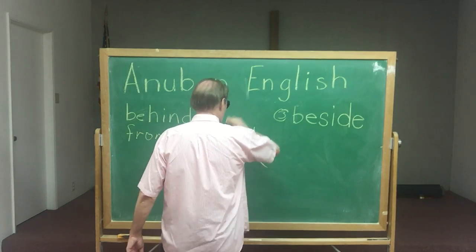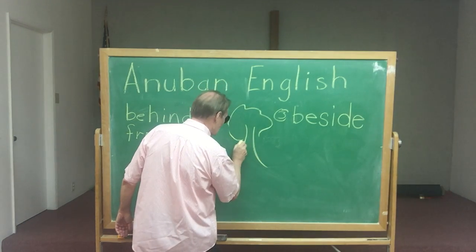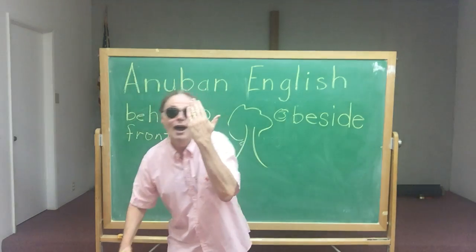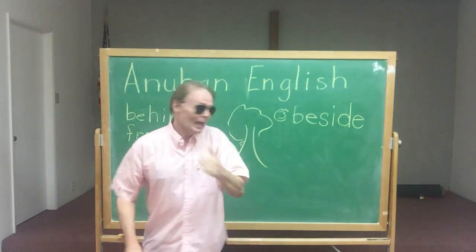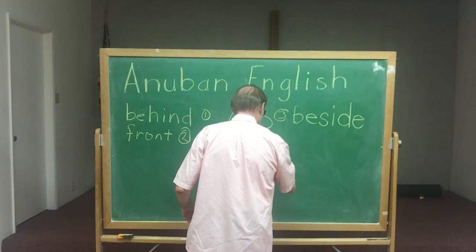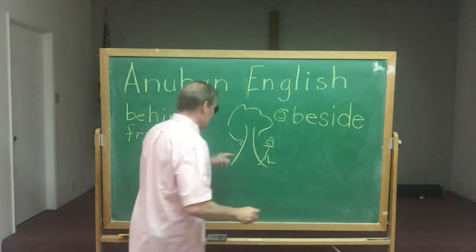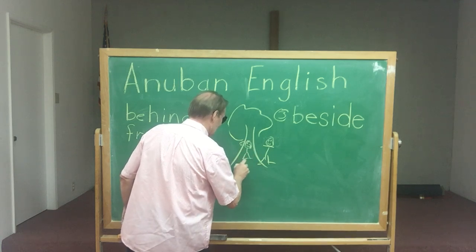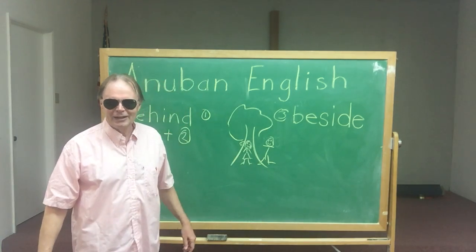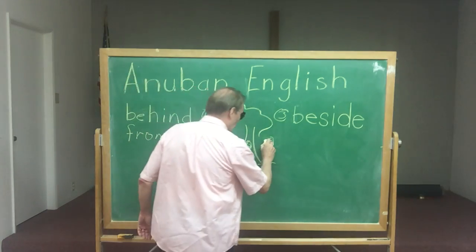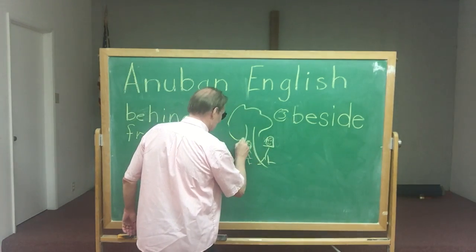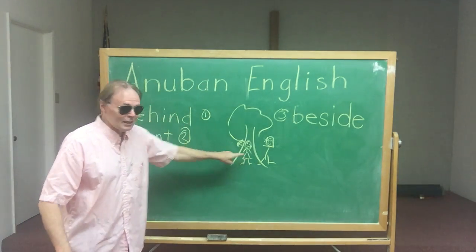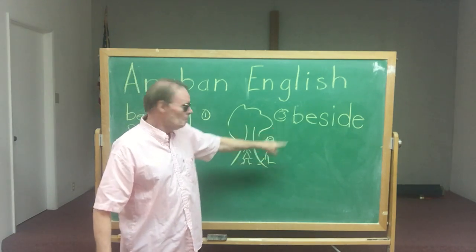So here's our tree. If someone's behind the tree, there's someone behind the tree, right? He's peeking out — hello! And here's someone beside the tree. And here's someone in front. We'll make this a girl, standing in front of the tree. There are three girls. We're going to make them all girls. This one's behind — number one. This one's in front — number two. And this one's beside — number three.